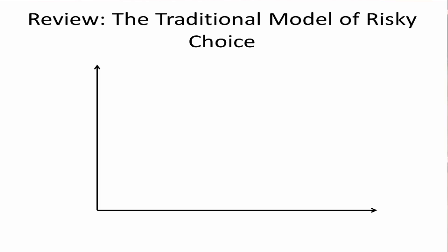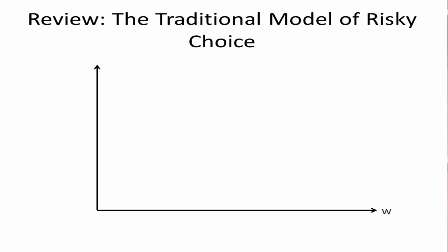If we think about our traditional model of risky choice — I put some review materials up online like I said I would, but we can also do a quick exercise here to remind you what we're talking about. We have this traditional model of risky choice where we talk about utility as a function of wealth, so we have some wealth level W and we get some utility from that wealth, call it U of W.